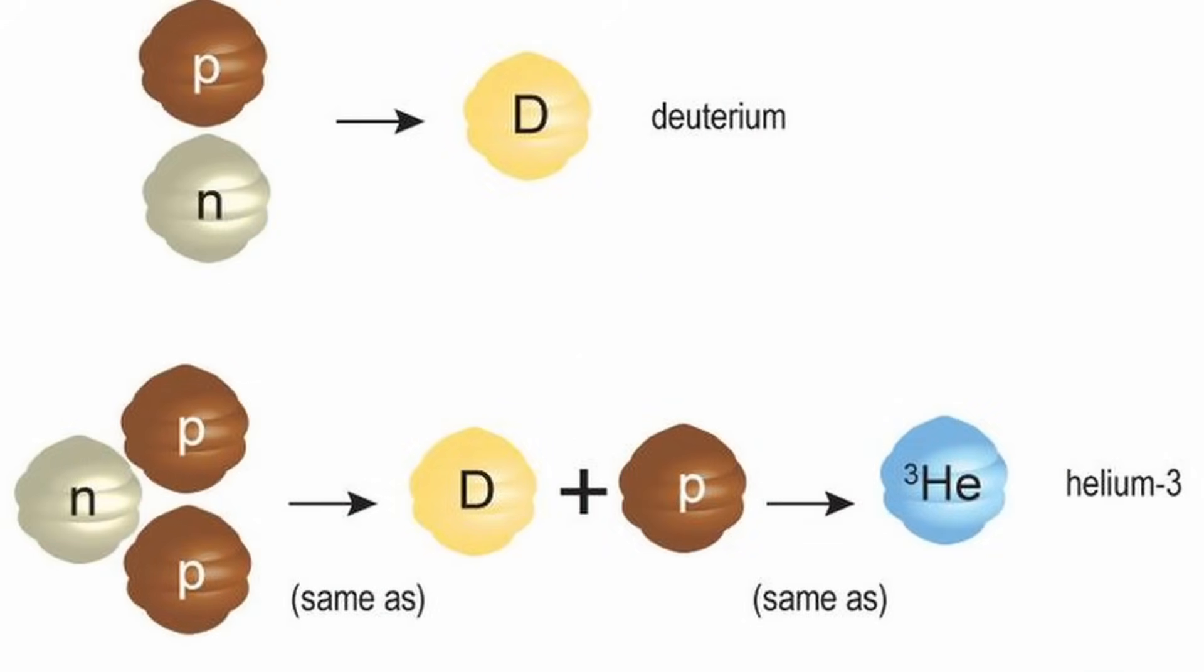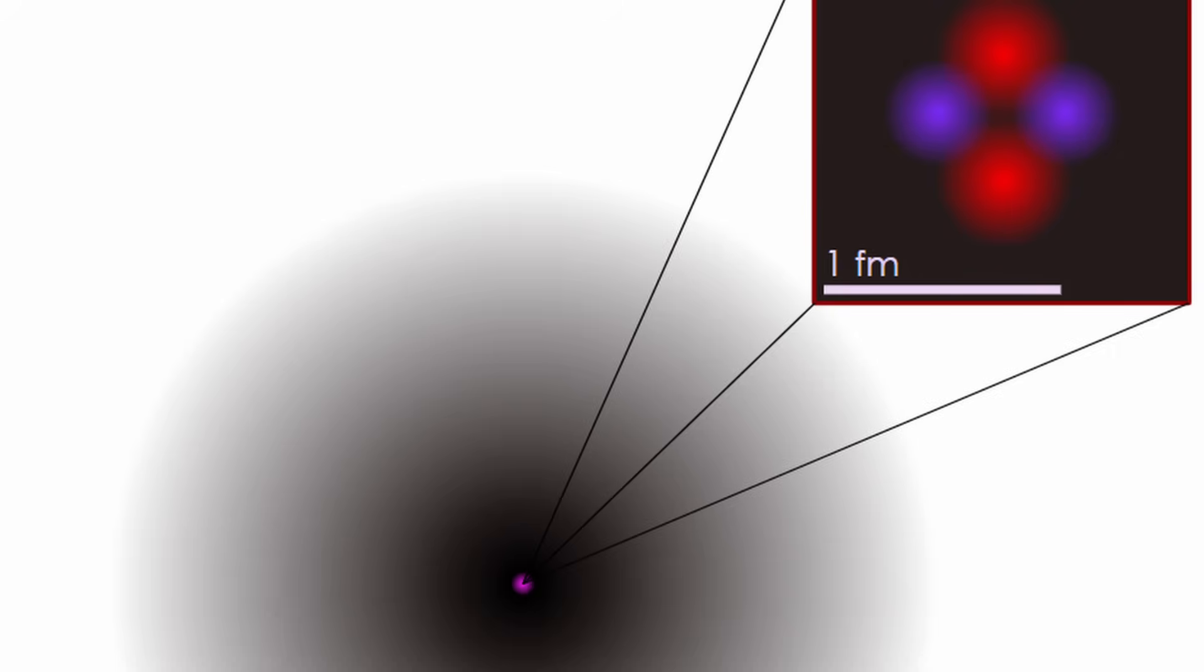One hundred seconds after the Big Bang, collisions between protons and neutrons began forming tiny amounts of other atomic nuclei, such as helium-3, which consists of two protons and one neutron, lithium, which consists of three protons and four neutrons, and deuterium, which consists of one proton and one neutron. These reactions finished within two to three minutes. By that time, the nuclei of 98% of today's helium atoms had formed.